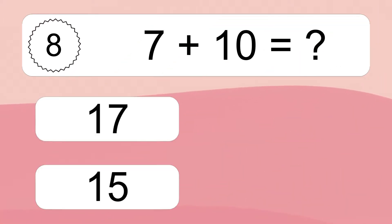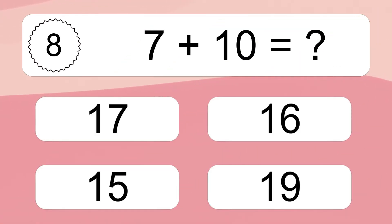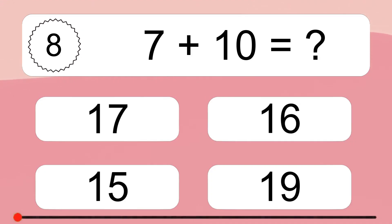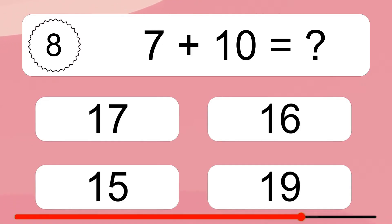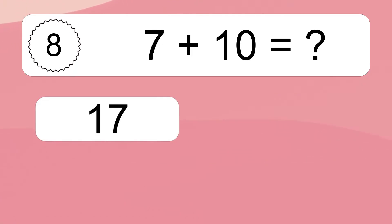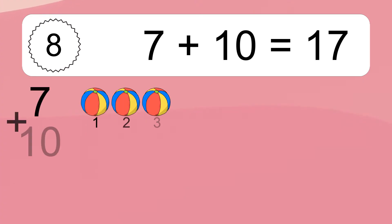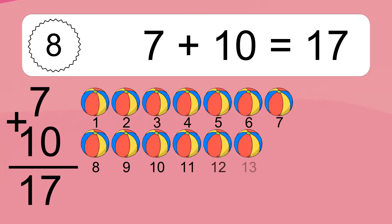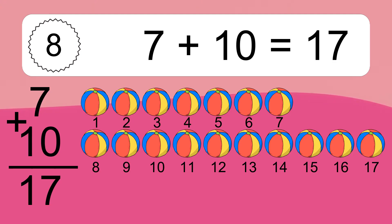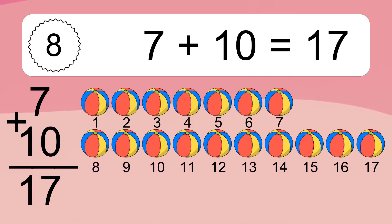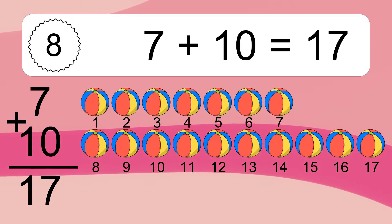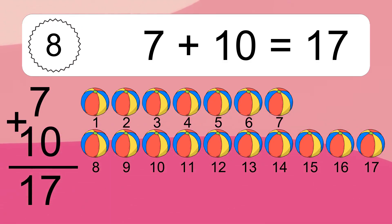Seven plus ten equals what? Seven plus ten equals seventeen. Let's count it: one, two, three, four, five, six, seven, eight, nine, ten, eleven, twelve, thirteen, fourteen, fifteen, sixteen, seventeen.